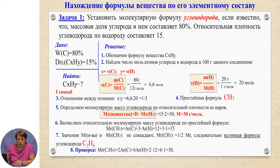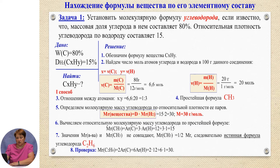Let us verify this. Calculating the molecular mass of C₂H₆ (ethane) confirms our result — it equals 30.